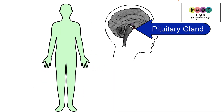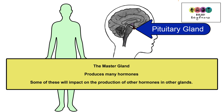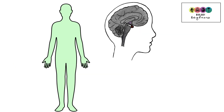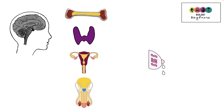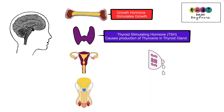Still in the brain we have the next gland, the pituitary gland. It is known as the master gland because it produces many hormones, and some of these hormones will then have an impact on the production of other hormones in other glands. The first key hormone is growth hormone, which stimulates or causes growth particularly in the bones. Next there's thyroid stimulating hormone or TSH, which travels to the thyroid gland at the front of the neck and causes the production of thyroxine.